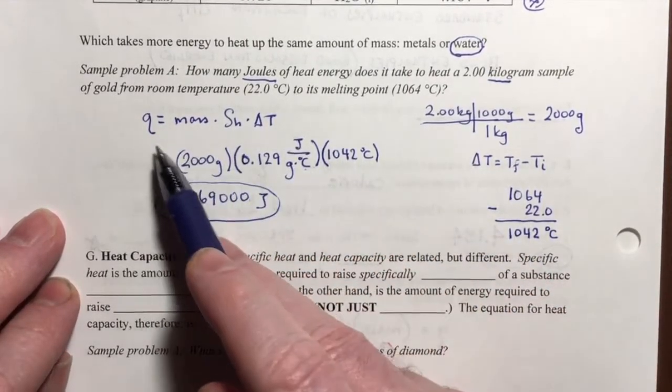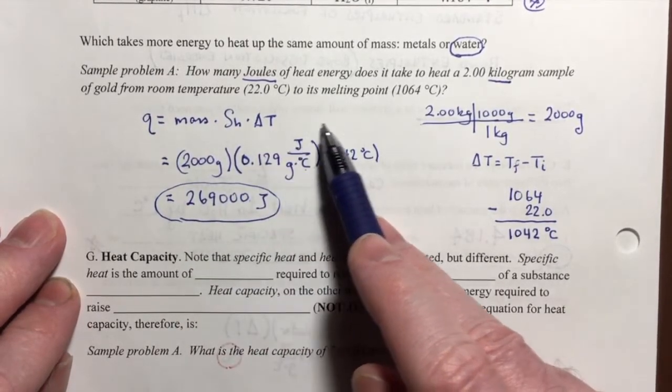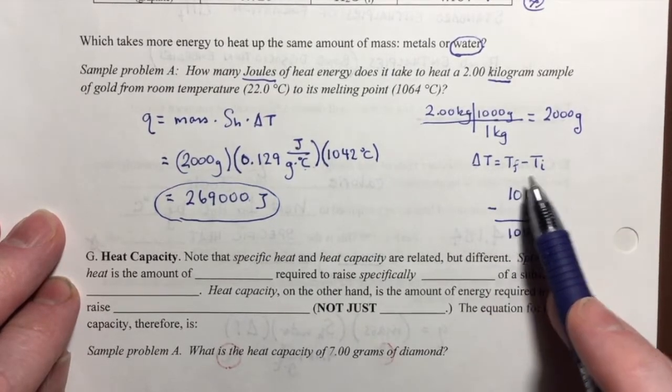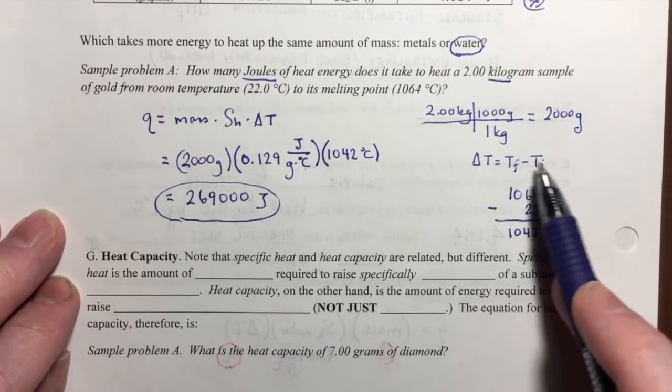In which case, you would use this equation to solve for delta T, and then you would plug delta T in this equation with either the final or initial temperature that was given to you and solve for the unknown temperature.